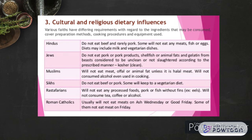Sikhs do not eat beef or pork, and some keep a vegetarian diet. Rastafarians will not eat processed foods, pork, or fish without fins such as eels, and will not consume tea, coffee, or alcohol. Roman Catholics typically do not eat meat on Ash Wednesday, Good Friday, or during the Lenten season, and some do not eat meat on Fridays.